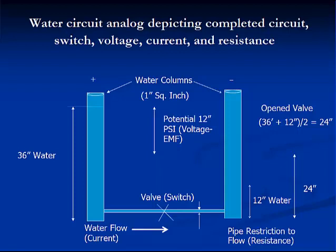The water level will seek equalization at 24 inches, which results in a potential head pressure of 12 inches — that is 36 inches minus 24 inches. This is like a 9-volt battery that is completely discharged. When the valve is opened, or electrical switch is closed completing the circuit, the water is allowed to flow, representing current in an electrical circuit. The pipe connecting the columns has a certain resistance to water flow depending upon its size, similar to resistance to current flow in an electrical circuit.